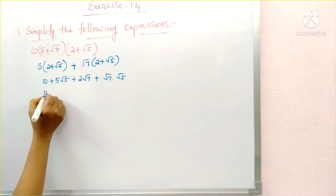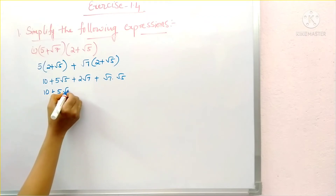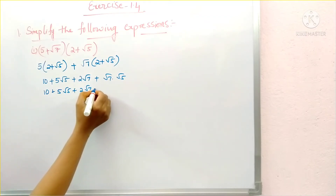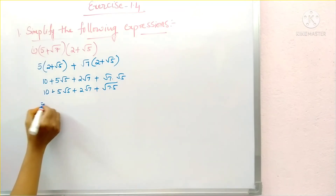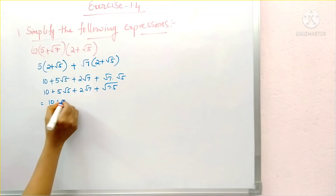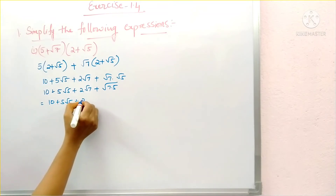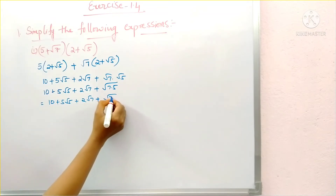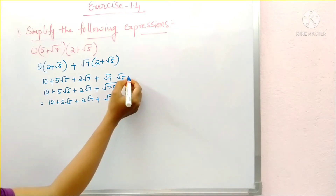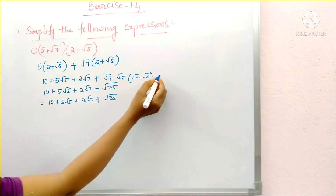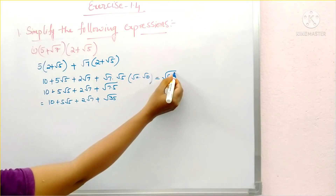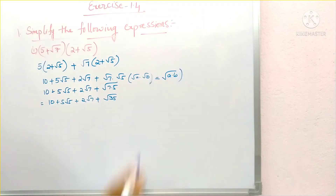So the result is 10 plus 5 root 5 plus 2 root 7 plus square root of 35. This is because root a into root b equals square root of a into b. That is the formula we used here. So like this we can simplify this expression.